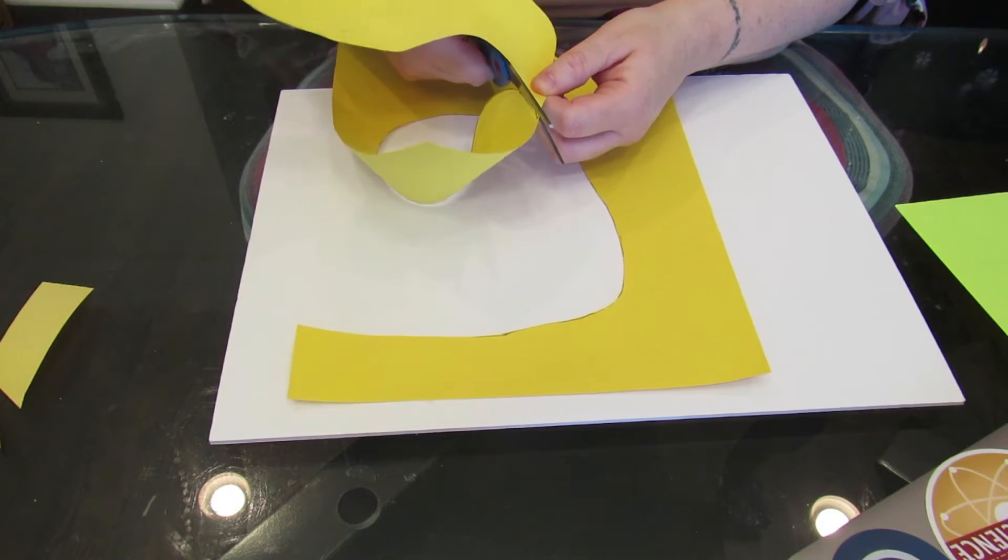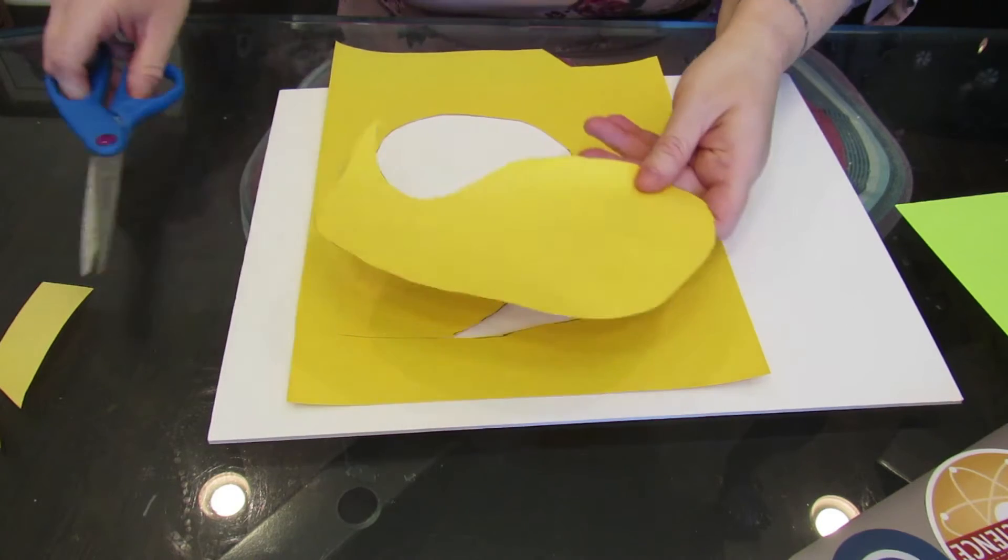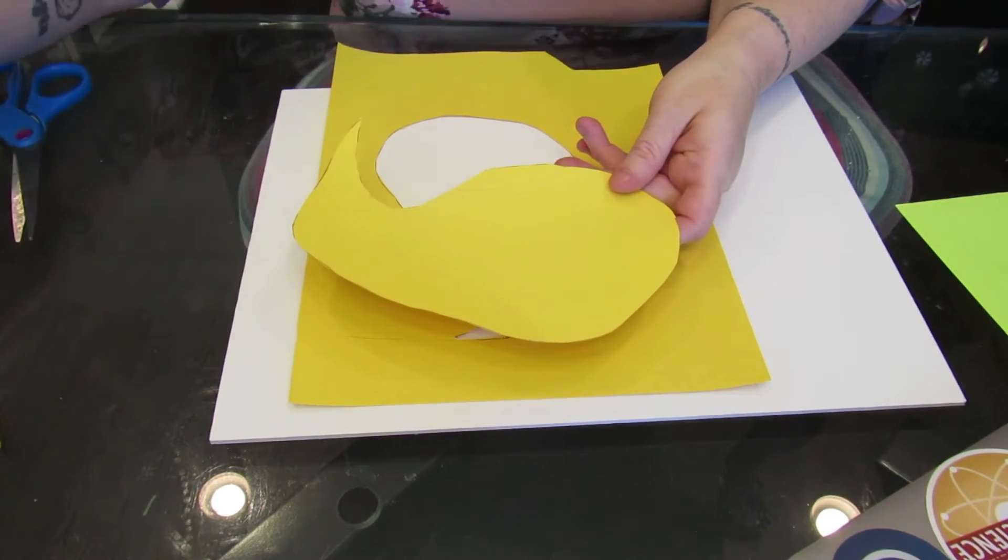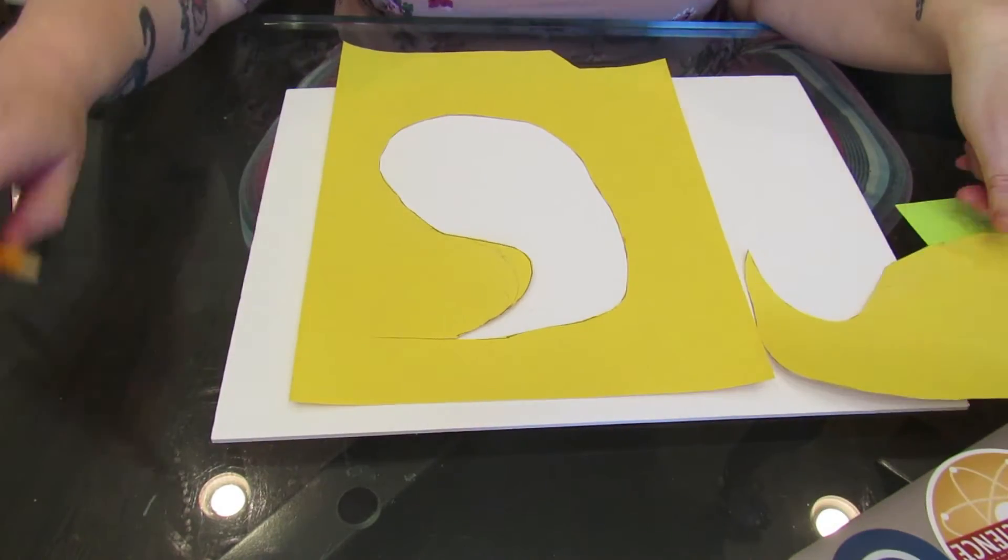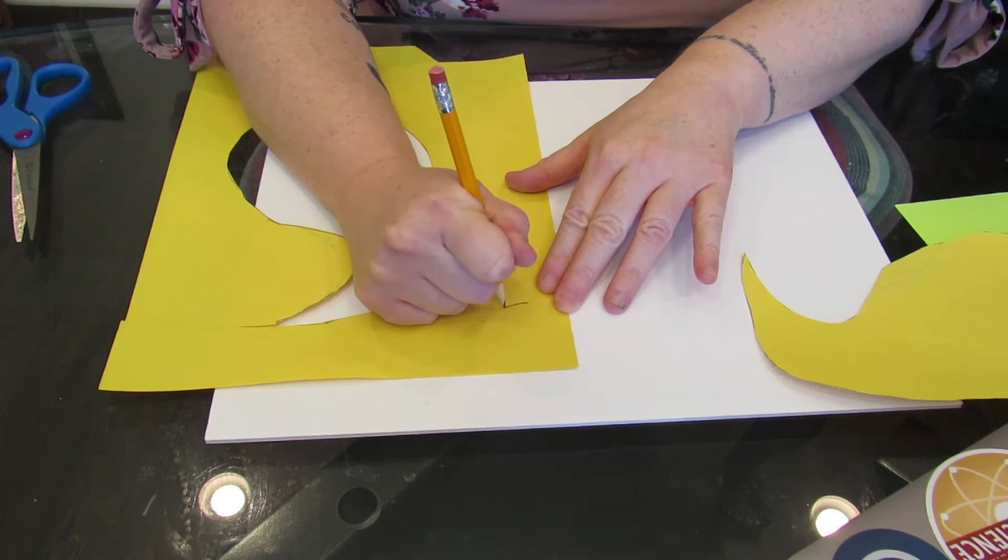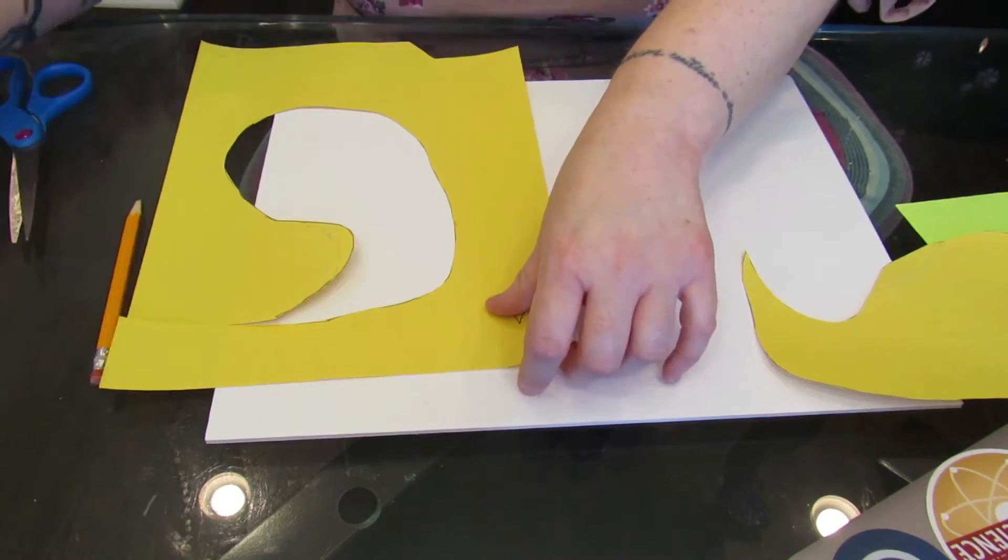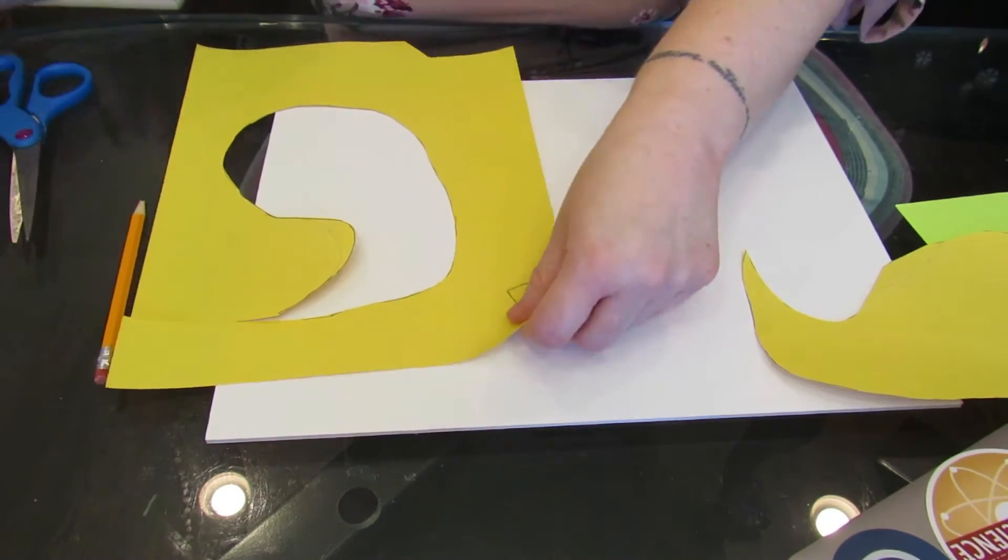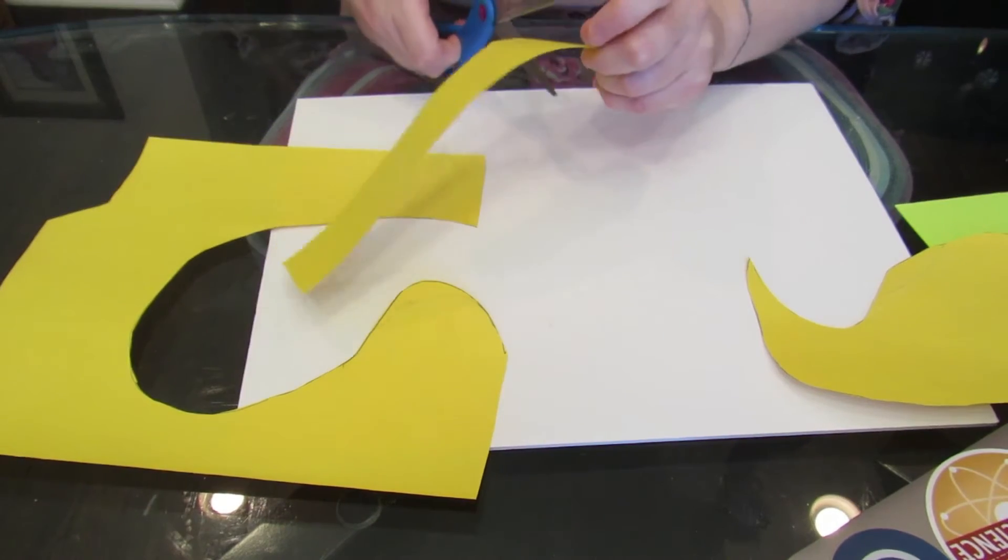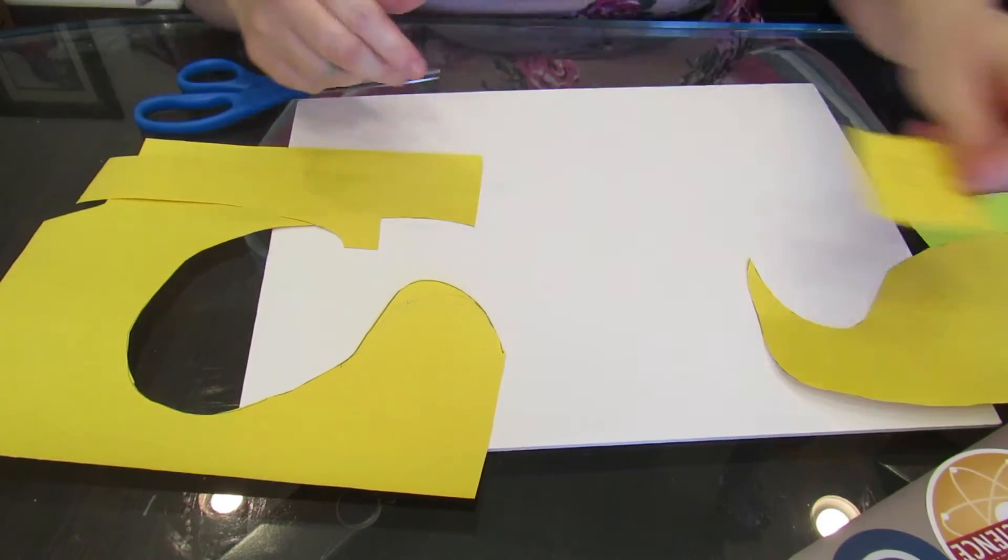Okay so just be careful around the tail area. We have our template and then on the extra paper you just draw your triangle and we have your beak. Okay, we'll cut that out in a little bit.